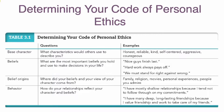The way you behave and interact with others — how does that affect things? Some people say they have mostly shallow relationships because they tend not to follow through on commitments. Others say they have many deep, long-lasting friendships because they value friendship and work to take care of their friends. If somebody is a friend, you expect that friend to be there in both good times and bad times.